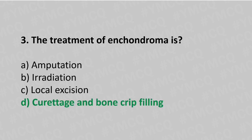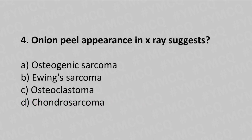Question number four: onion peel appearance on X-ray suggests option A osteogenic sarcoma, option B Ewing sarcoma, option C osteoclastoma, option D chondrosarcoma.